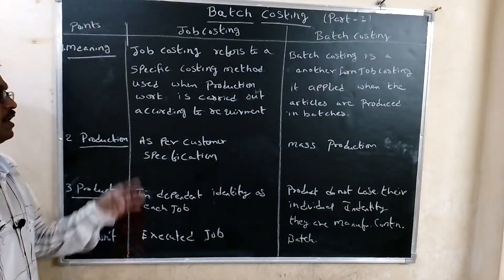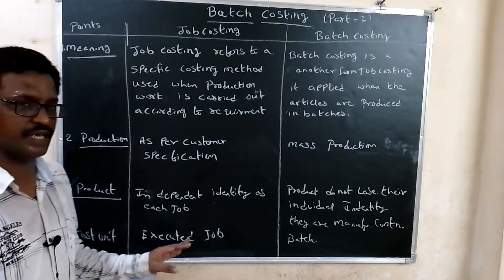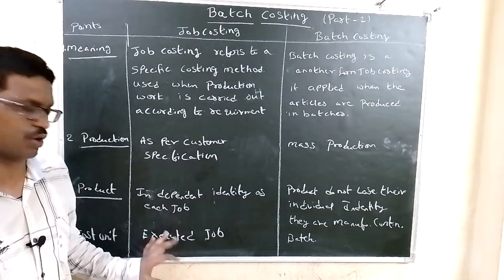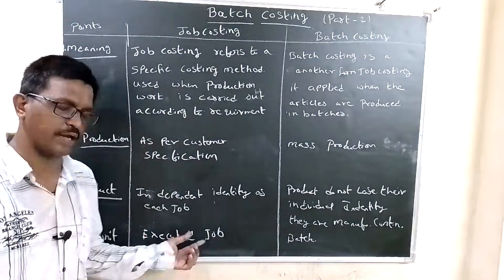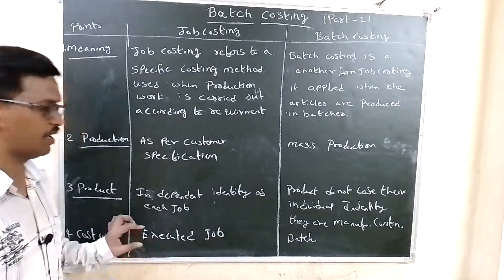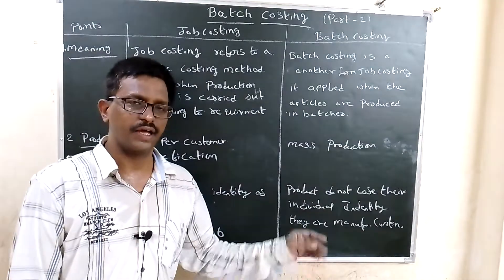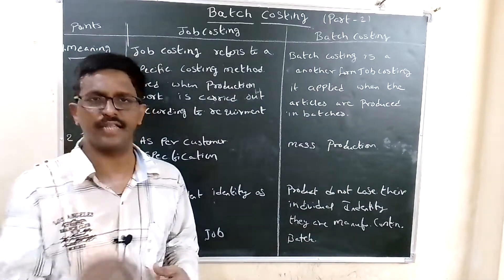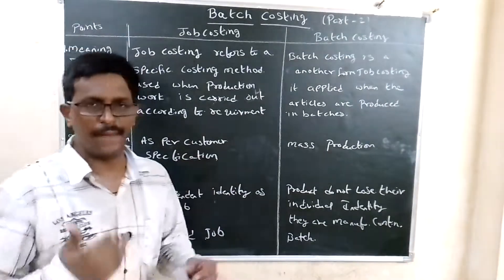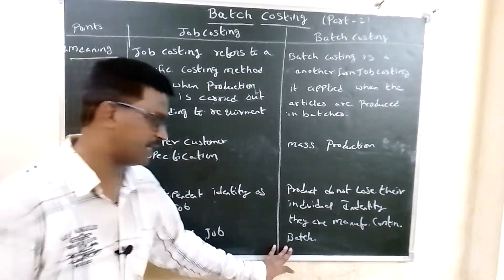Next, cost per unit. For job costing, the cost per unit is calculated for each executed job. For batch costing, the cost per unit is calculated batch-wise — based on the total batch cost divided by the number of units produced in that batch.